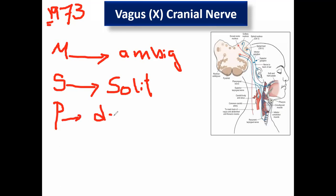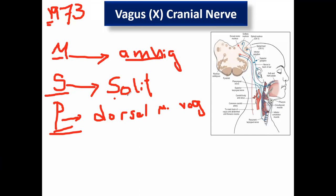The parasympathetic nucleus of the vagus is named the dorsal motor nucleus of vagus, which lies in the dorsal surface of the medulla at the vagal trigone. The dorsal motor nucleus of vagus is parasympathetic. The motor is ambiguous, the sensory is solitarius. The vagus nerve exits from the post-olivary fissure, descends through the jugular foramen, and descends in the neck vertically inside the carotid sheath to enter the thorax.